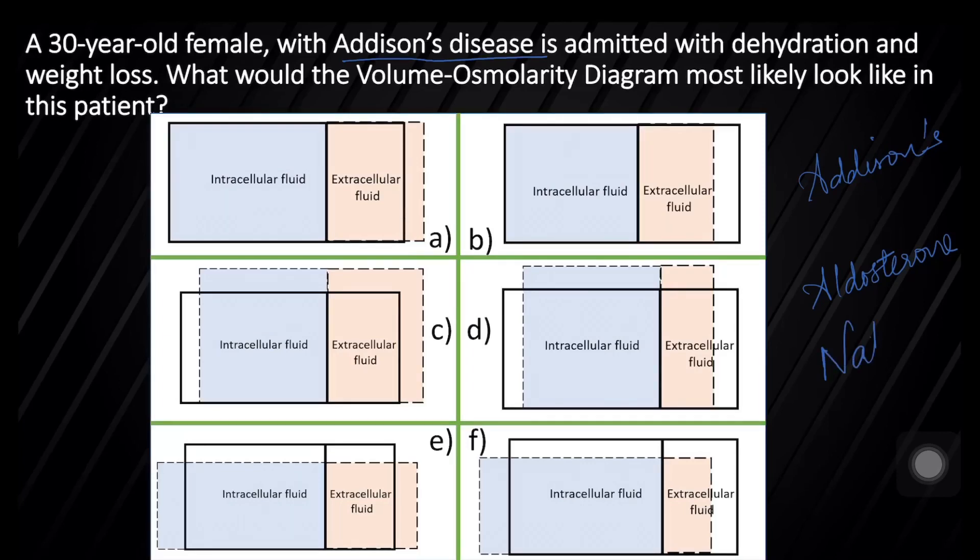Without it, there would be loss of sodium in the urine. This would cause the osmolarity of the ECF to go down. This would cause the fluid shift from ECF into the intracellular compartment. The cells would start swelling. So the option is F. This is called hypoosmotic volume contraction in the extracellular fluid.